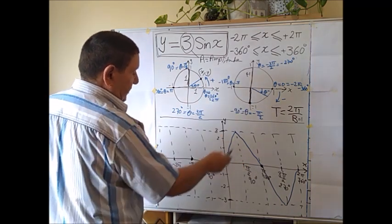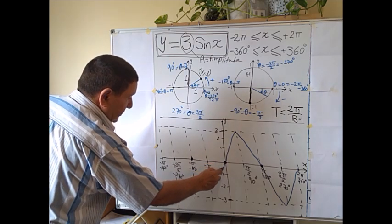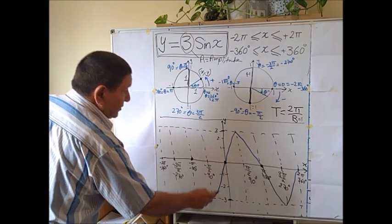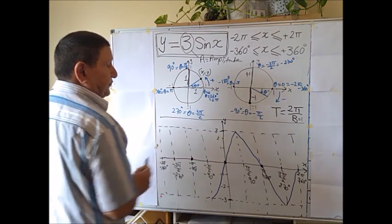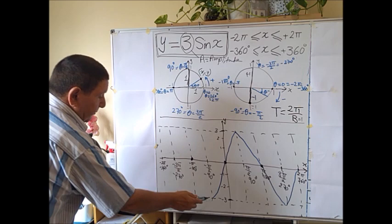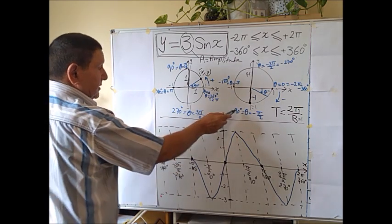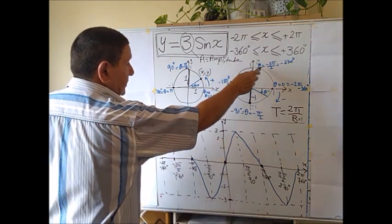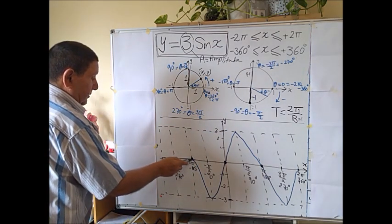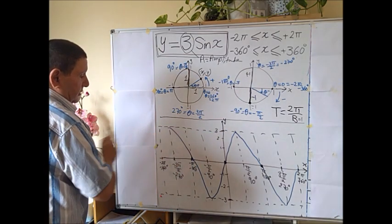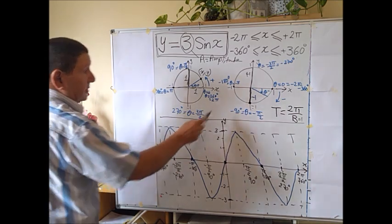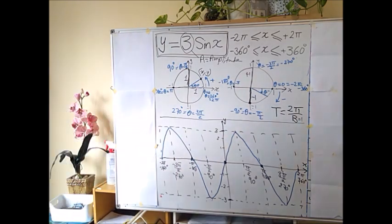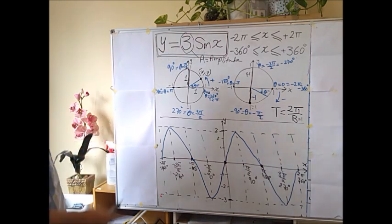On the negative side: the wave goes to -1 (since sin(-90°) = -1, giving -3), back to 0 at -π, then up to +1 (giving +3) at -3π/2, and back to 0 at -2π. This completes the wave function for y = 3 sin(x).